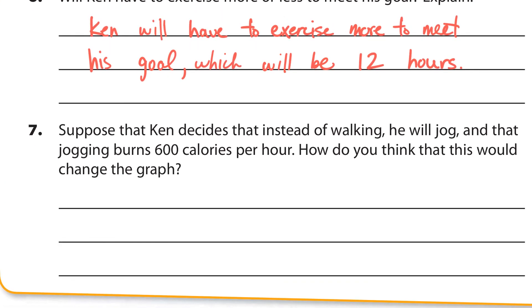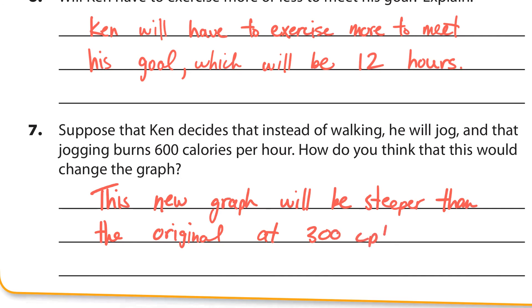And suppose Ken decides instead of walking, he will jog, and the jogging burns 600 calories per hour. How do you think this would change the graph? I suppose this new graph will be steeper than the original at 300 calories per hour. Because that means it would be y equals negative 600x plus 2400. And there you go. That is what you've got to know about graphing these equations with y equals mx plus b and real world situations. Thanks for watching.